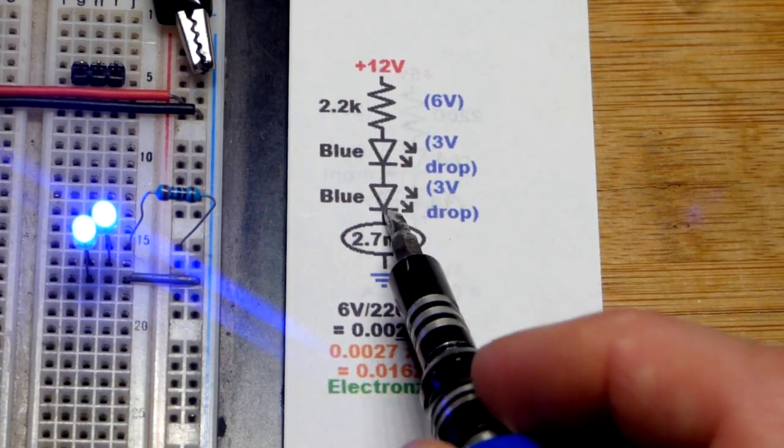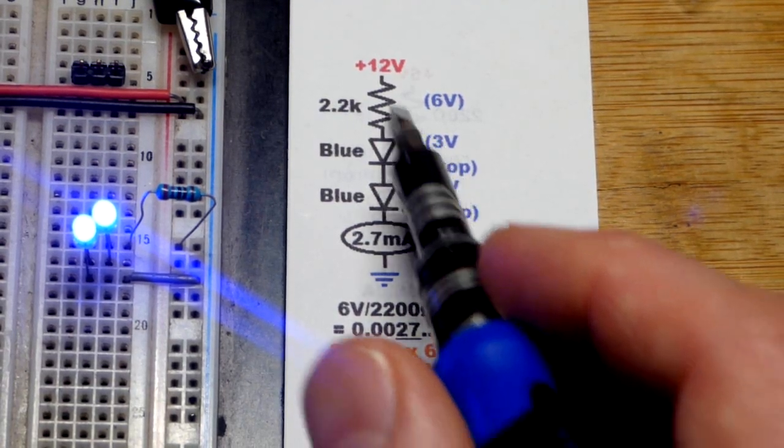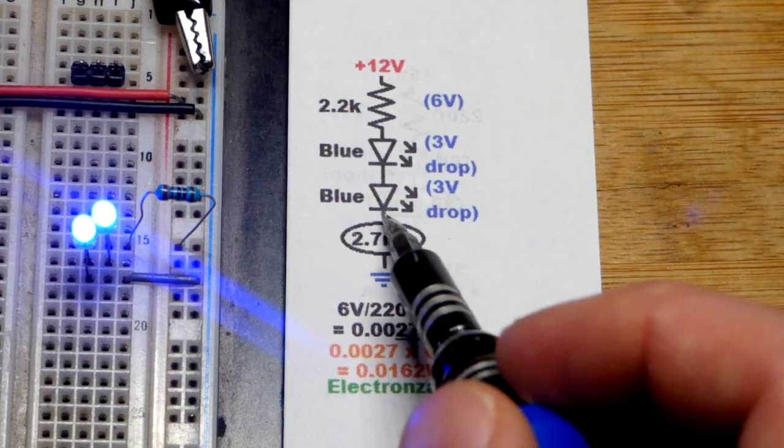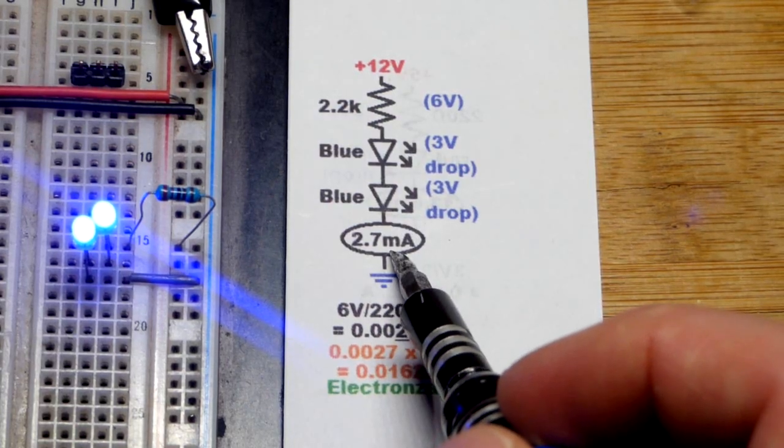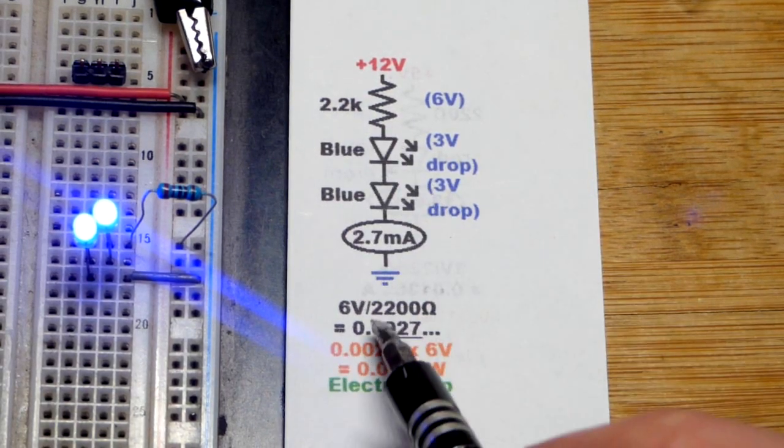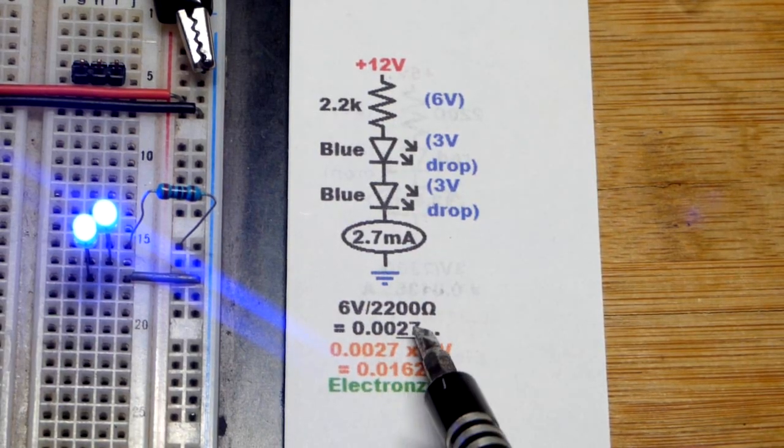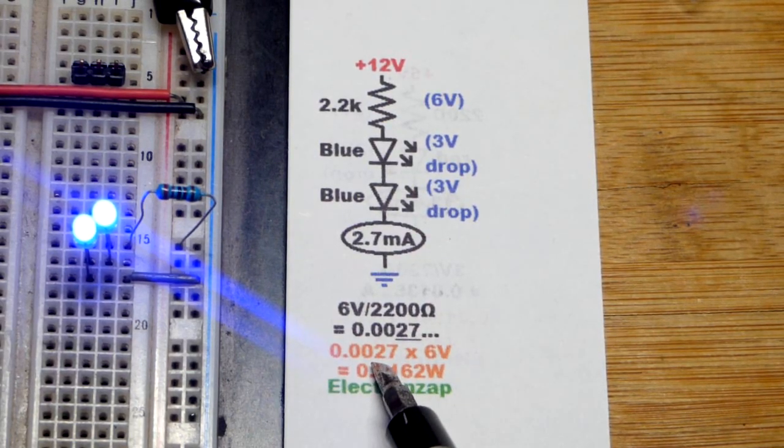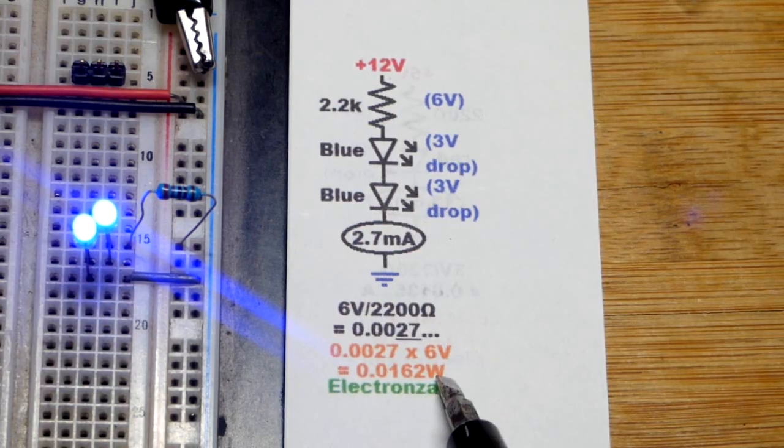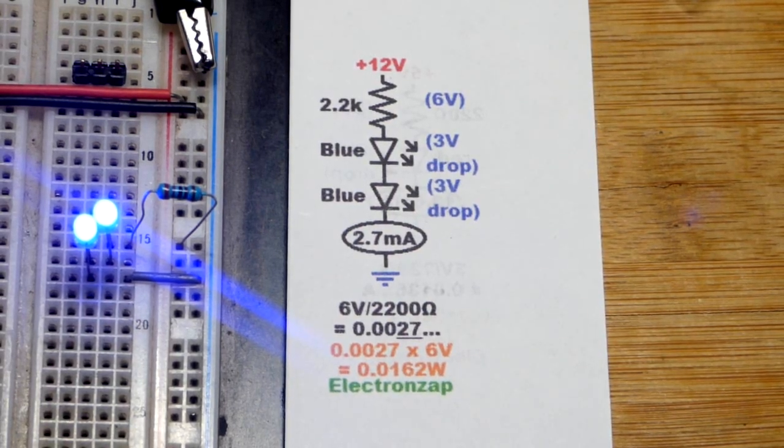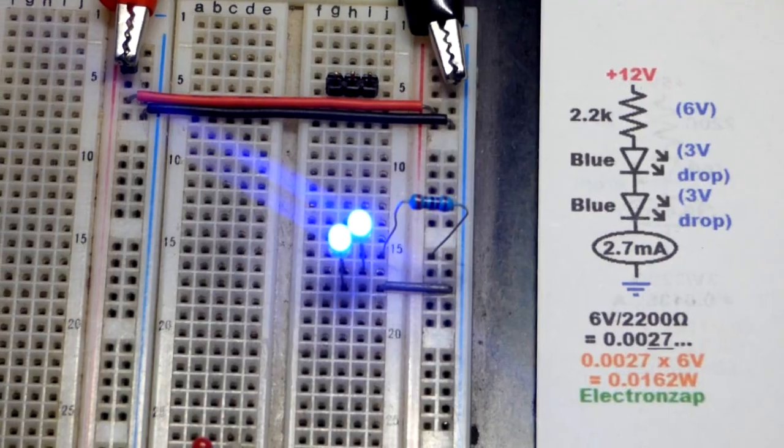So the two blue LEDs in series are going to drop about 6 volts out of 12 volts if you have a 12 volt supply. We're going to end up with about 2.7 milliamps current if we have a 2200 ohm resistor. So there's the math there—it's rounded off, of course. That's 2.7 going forever. And there's the wattage right there. Again, resistor's not going to get terribly hot, which is pretty common with 12 volt circuits in these quarter watt resistors.